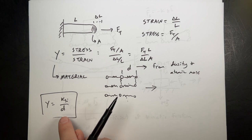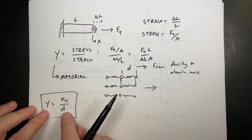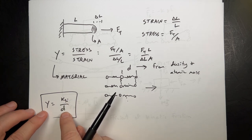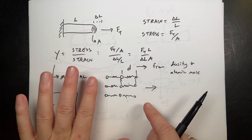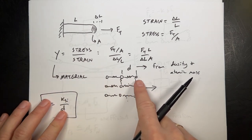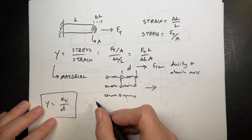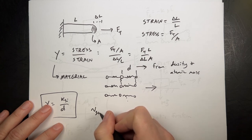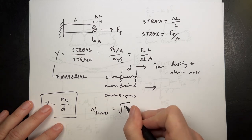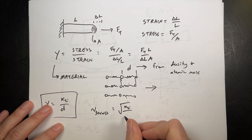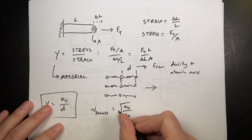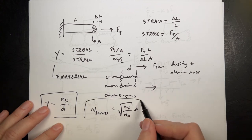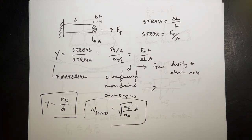This same interatomic spring constant also determines the speed of sound in that material, because if I hit one side, it sends a compression wave through. The velocity of sound in that material is the square root of K_si divided by the product of the atomic mass and the distance between atoms (the atomic diameter).